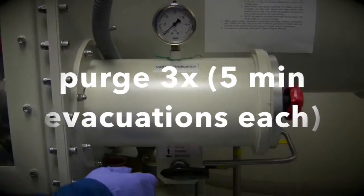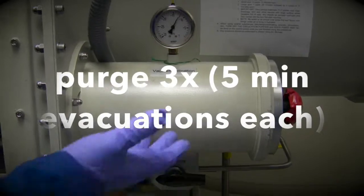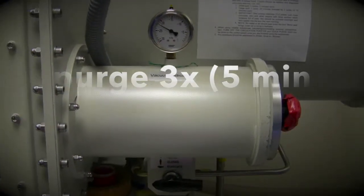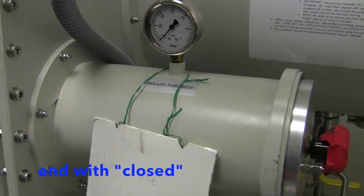The first purge can be quick. After that, you can purge three times, five minutes each for the evacuation cycle. Fill the chamber with nitrogen and end on the closed position.